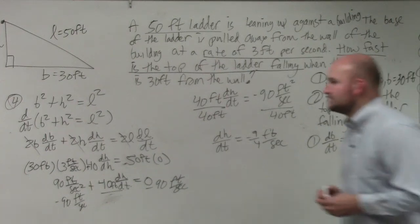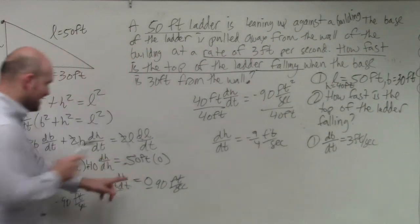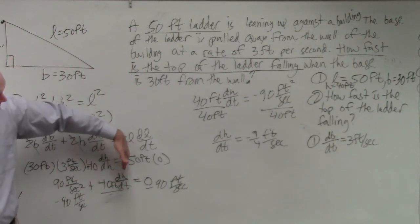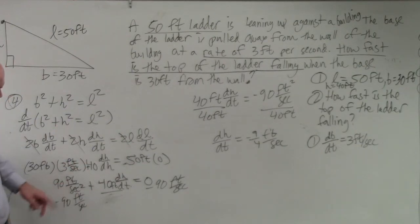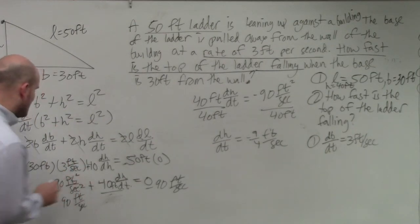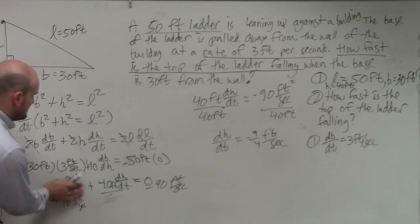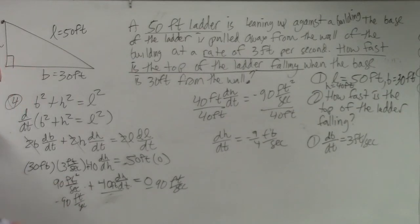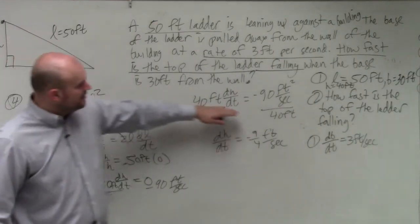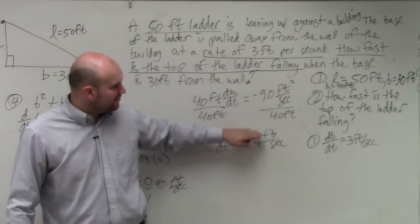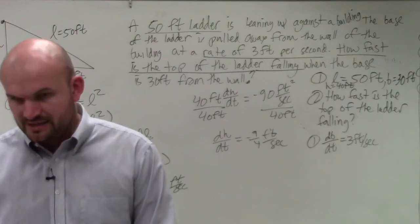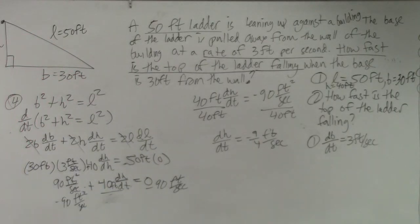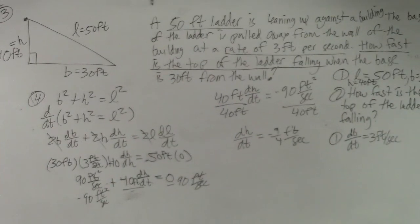Once you subtract 90 feet and then divide by 40 feet, you'll be left with negative 9.4 feet per second as the rate that it is changing. Does anybody have any questions as far as setting up the problem?